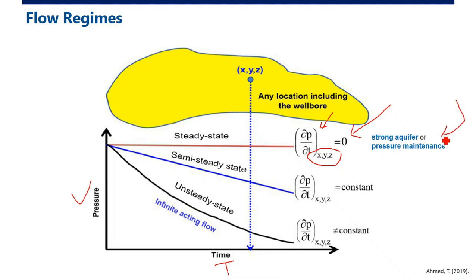We can find steady state flow conditions with a strong aquifer or reservoirs with good pressure maintenance, for example water injection and waterflood. For pseudo-steady state (or semi-steady state), the change in pressure as a function of time at all locations xyz in the reservoir is constant.